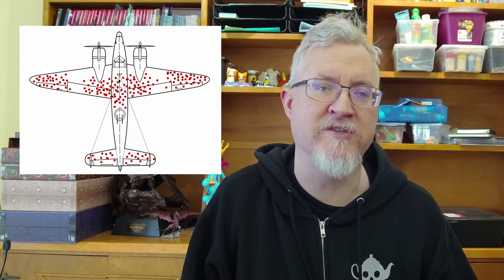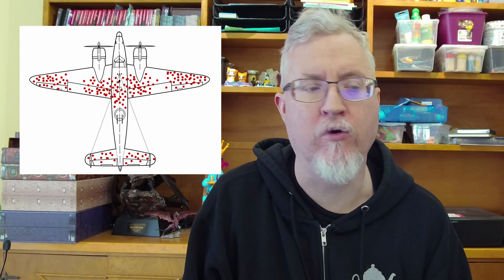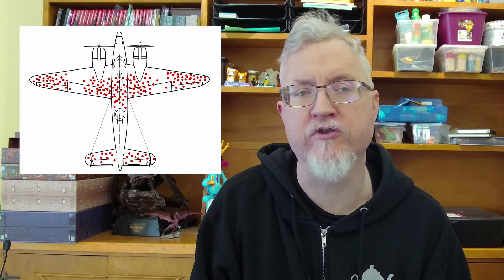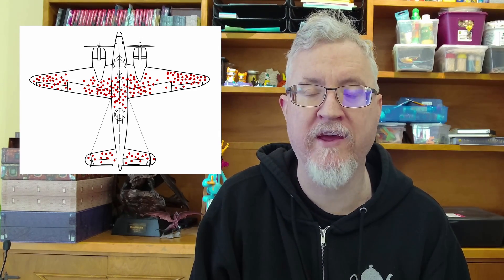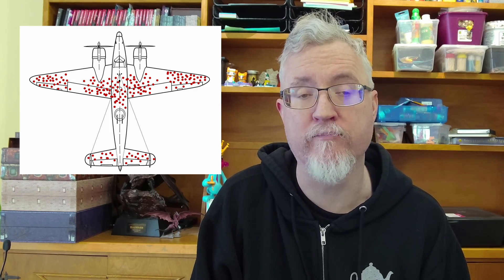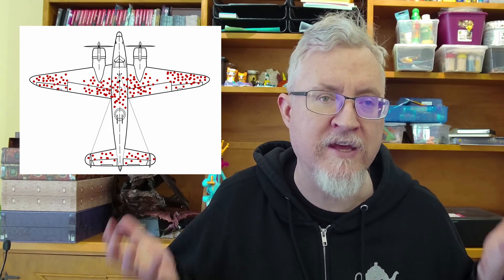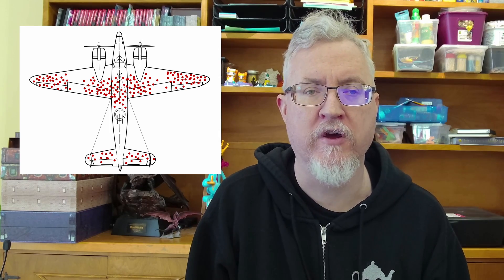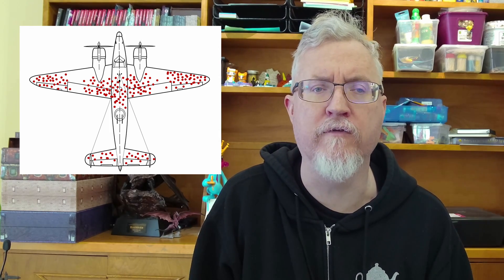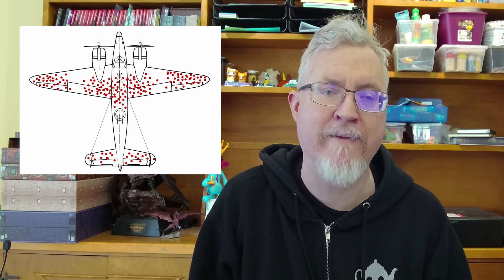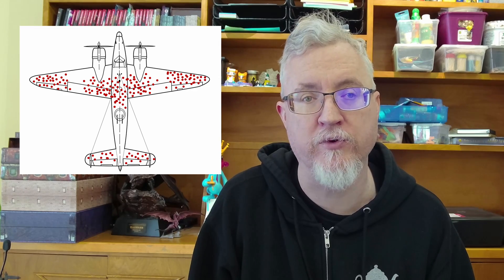Survivorship bias allows me to use my favorite bias-related image, from World War II, where analysis was being done on bombers that were returning from raids and deciding what to do to improve the survivability of the raids. The initial instinct was to add armor to all of the places indicated in red — the places where damage was occurring on the planes that were returning.